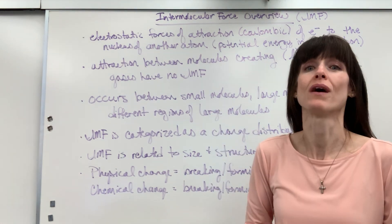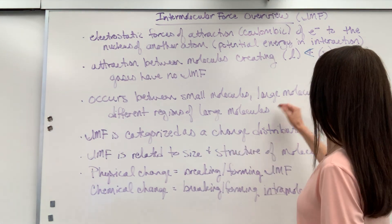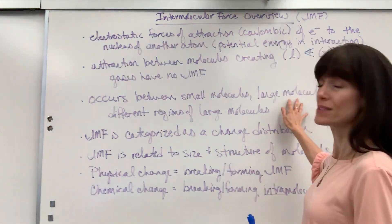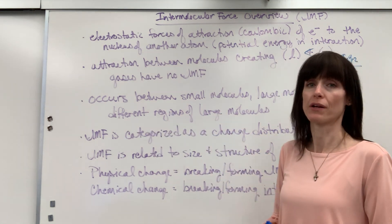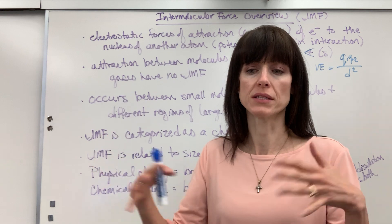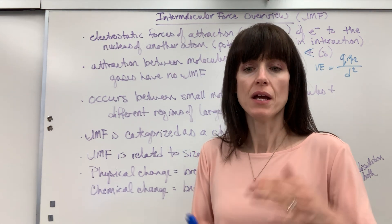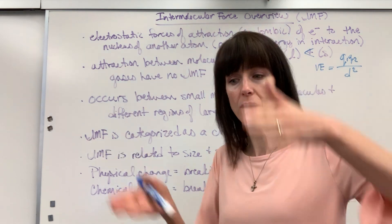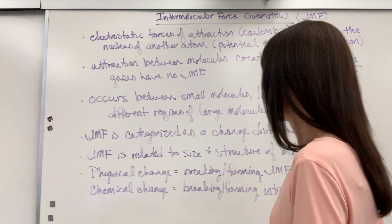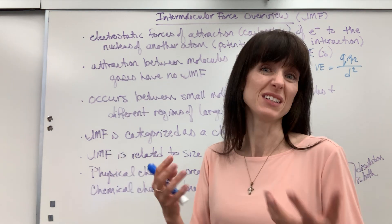Where do we see intermolecular forces? This is going to be in molecules — covalent compounds — when you have non-metal and non-metal. They can be in small molecules like water or ammonia, or large molecules like hydrocarbons and oils. They can also be in different regions of large molecules. A really good example is proteins: they'll have non-polar regions and polar regions that create attraction and repulsion. Think about the lipid bilayer of our cells — a polar side and a non-polar side, where the non-polar sides attract together in the middle and the polar ends are on the outside of the membrane.